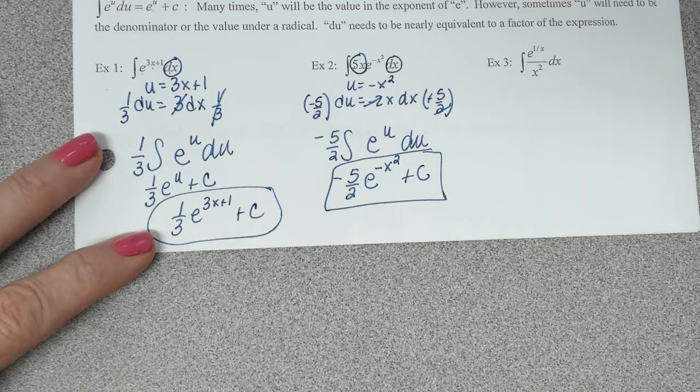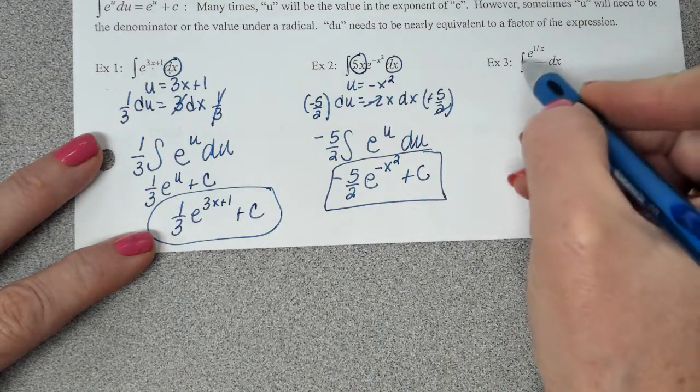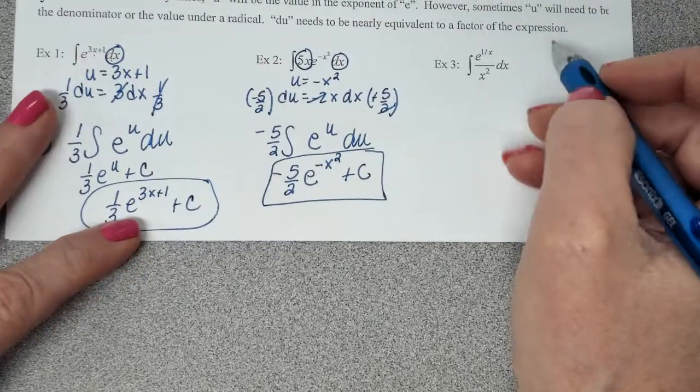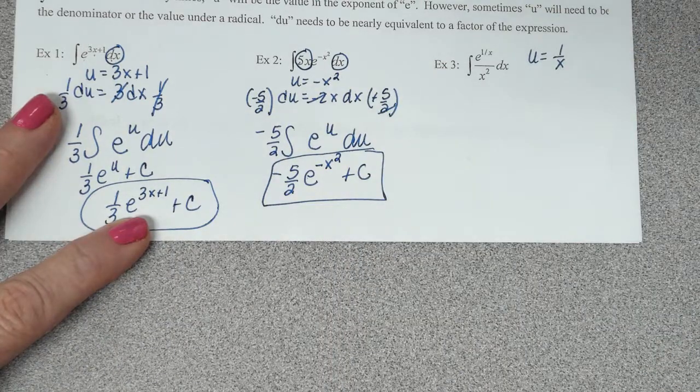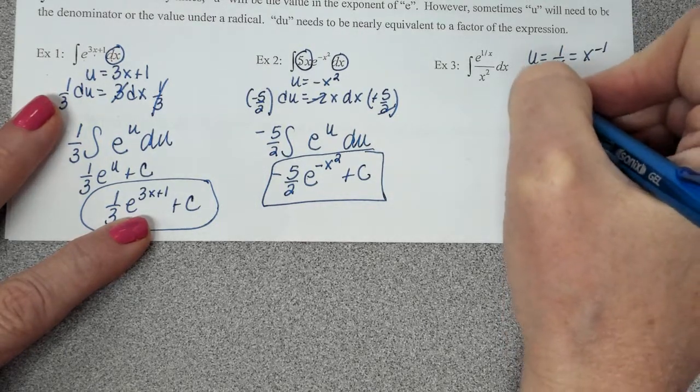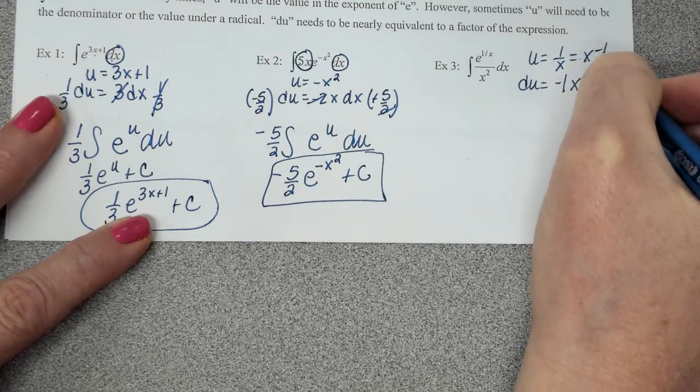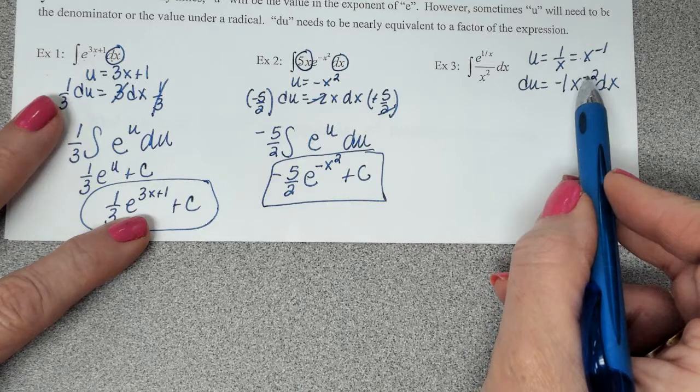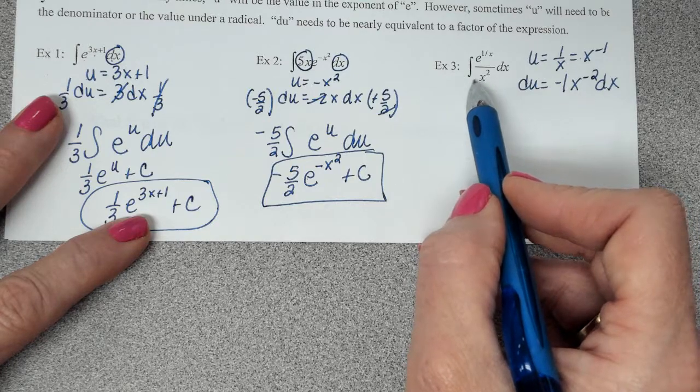All right. On example 3, if we have an exponent on the e, it's 90% sure that that's going to be what our u is equal to. We have an exponent on the e that's not just an x. So because of that not being just an x, that's probably what we want u to equal. But if I say u equals 1 over x, that's pretty tough to take the derivative of. So how should we rewrite that? x to the negative 1. So now when we take the derivative, 1 times negative 1 is negative 1, x to the negative 2. Now that kind of looks like maybe that wasn't a good thing because we got x to the negative 2, and we're supposed to get x to the positive 2. That is x to the negative 2, isn't it?